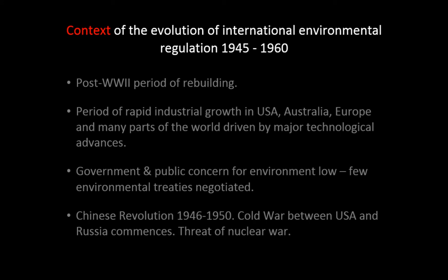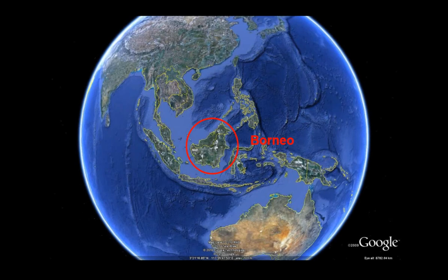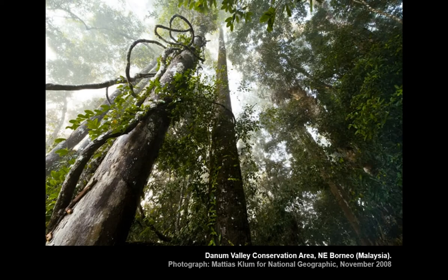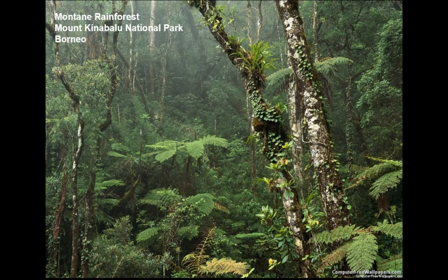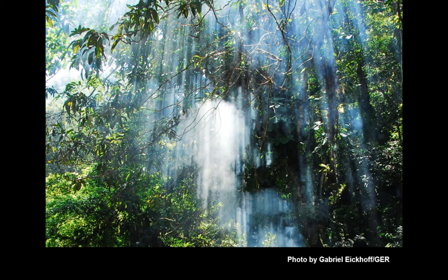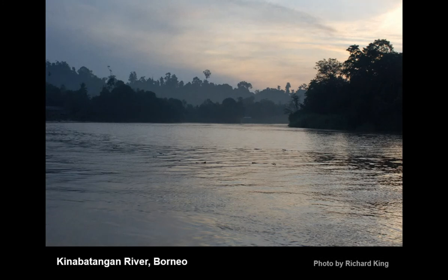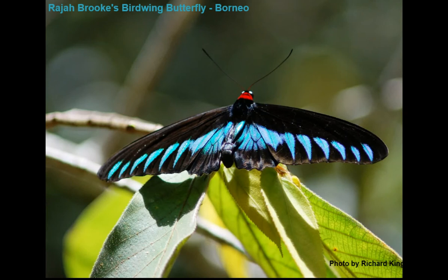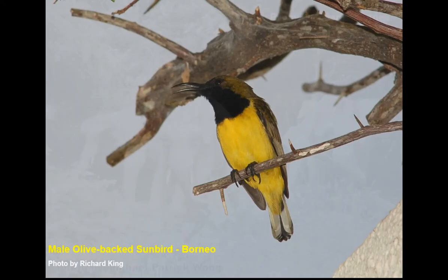Three countries occupy Borneo: Indonesia has most of it, Malaysia in the northwest, and Brunei in its own section. Borneo is renowned for its biodiversity — amazing forests. David Attenborough once said the most amazing place he'd ever visited in his entire career was Borneo in the 1960s. It's a global biodiversity hotspot with incredible creatures like orangutans, proboscis monkeys, beautiful butterflies, amazing plants, birds, and pygmy elephants.